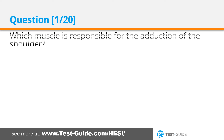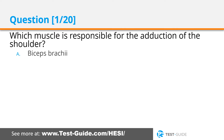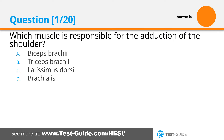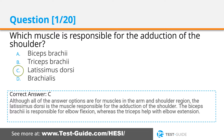Question one: Which muscle is responsible for the adduction of the shoulder? Options: biceps brachii, triceps brachii, latissimus dorsi, brachialis. Correct answer C. Although all of the answer options are muscles in the arm and shoulder region, the latissimus dorsi is the muscle responsible for the adduction of the shoulder. The biceps brachii is responsible for elbow flexion, whereas the triceps help with elbow extension.